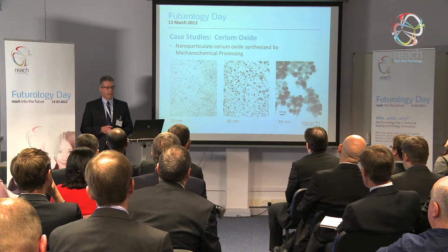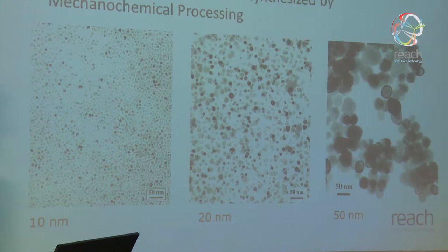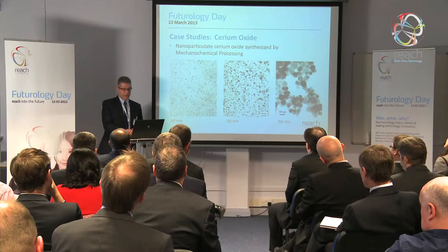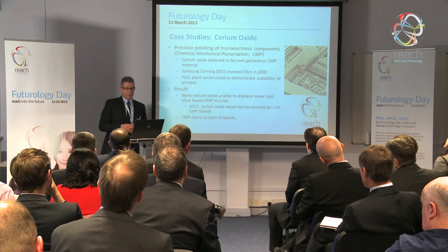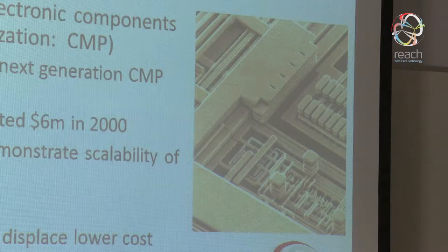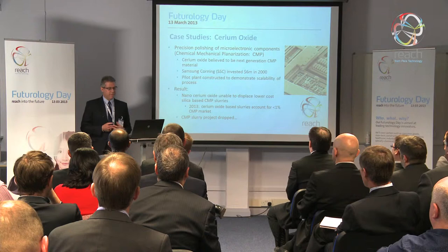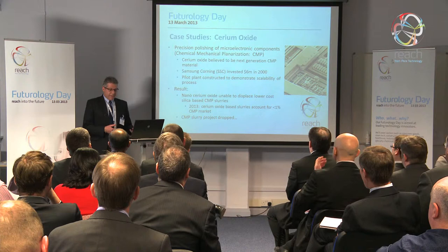We were very excited about this, and the application area we targeted was ultra-fine polishing of microelectronic components, called CMP or chemical mechanical planarization. When silicon chip devices are fabricated they are put down in layers — a layer is deposited on the silicon wafer, that layer has to be polished before the next layer can be put down. That's called CMP, and because of the very small feature size, very small abrasive particles or nanoparticles are required.